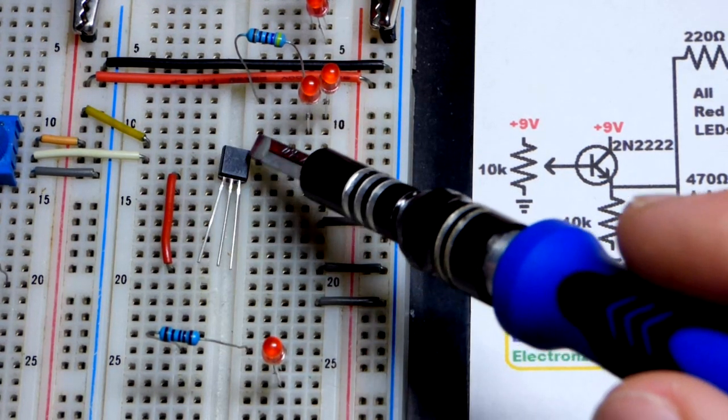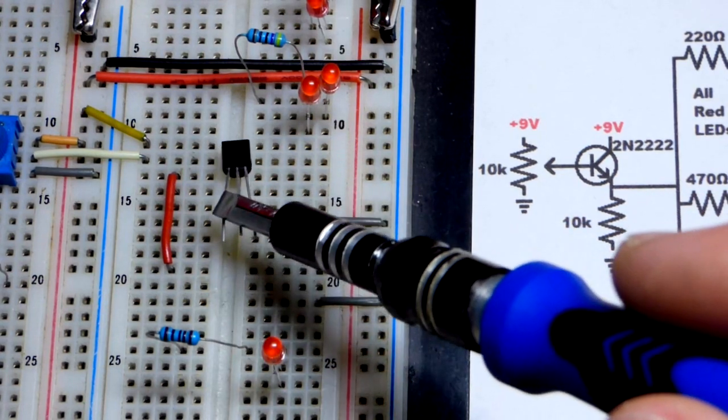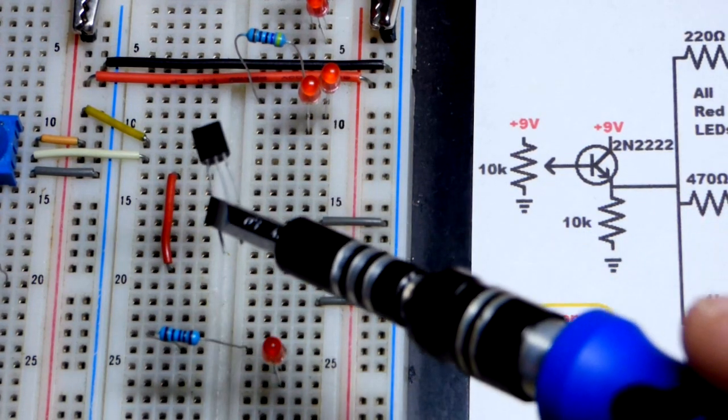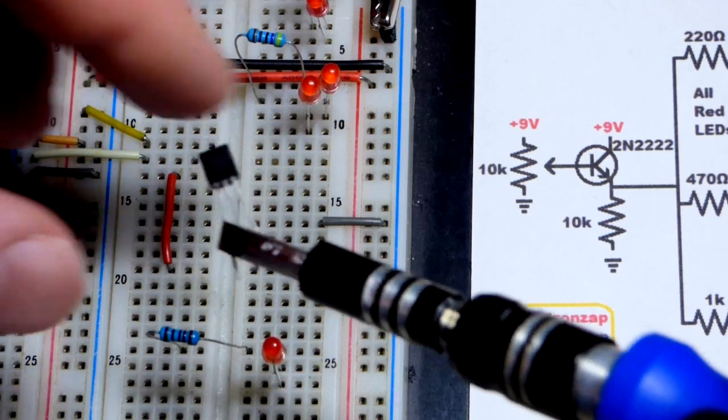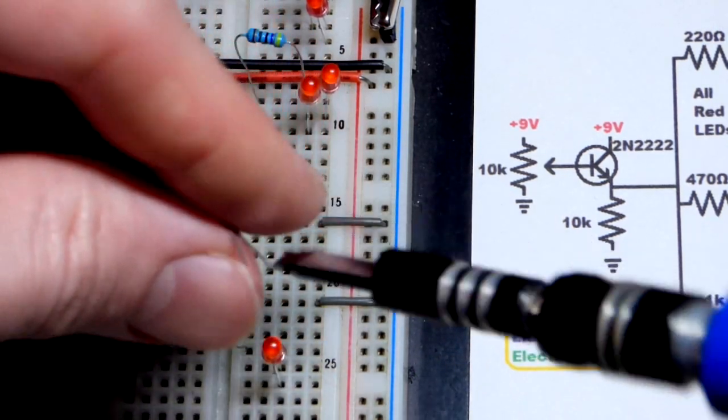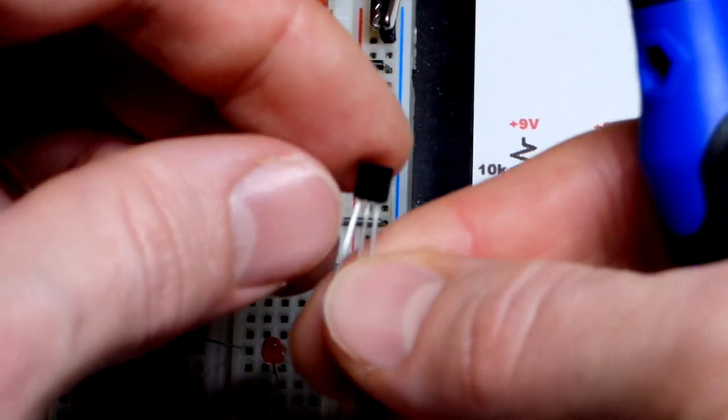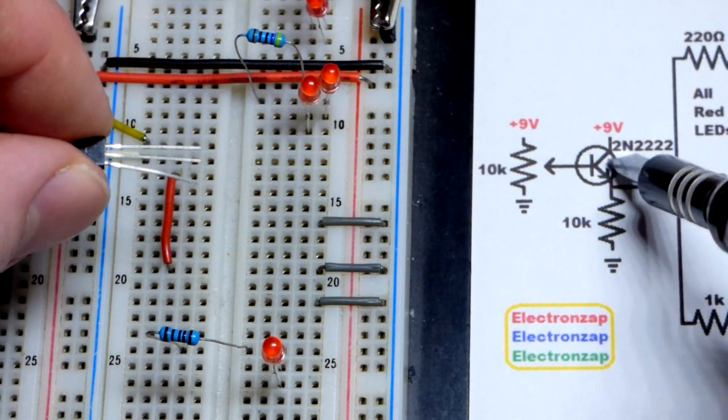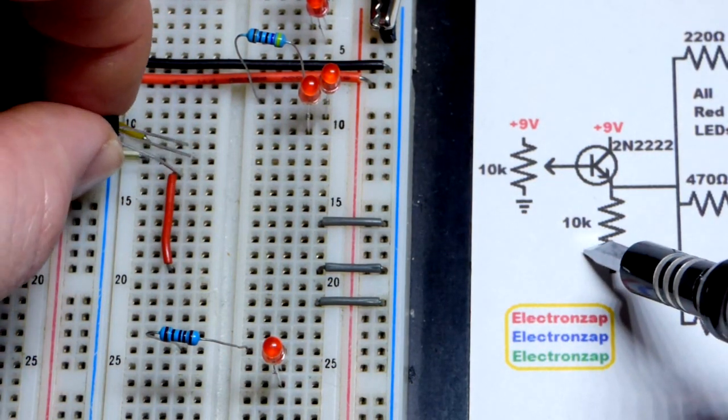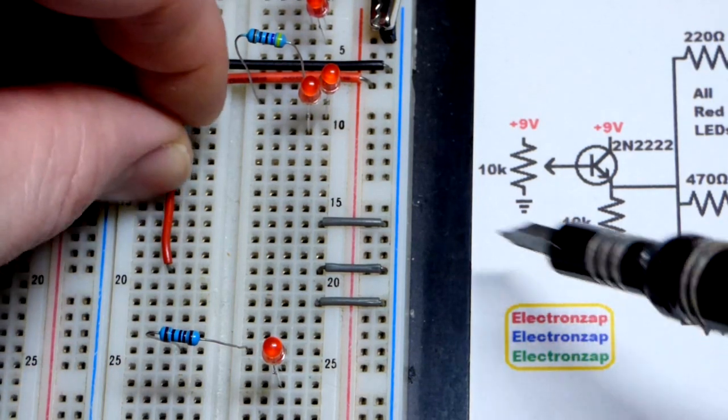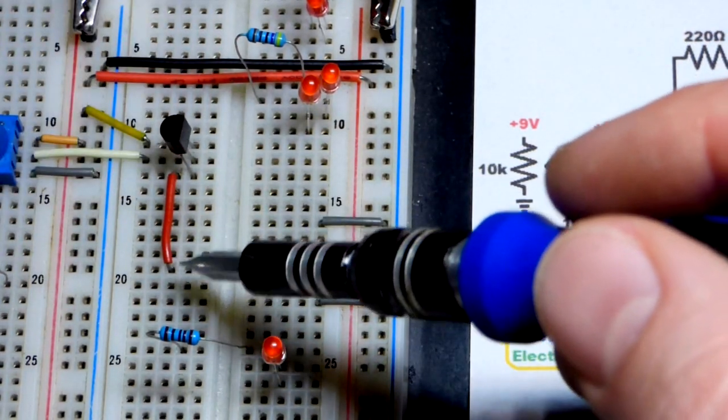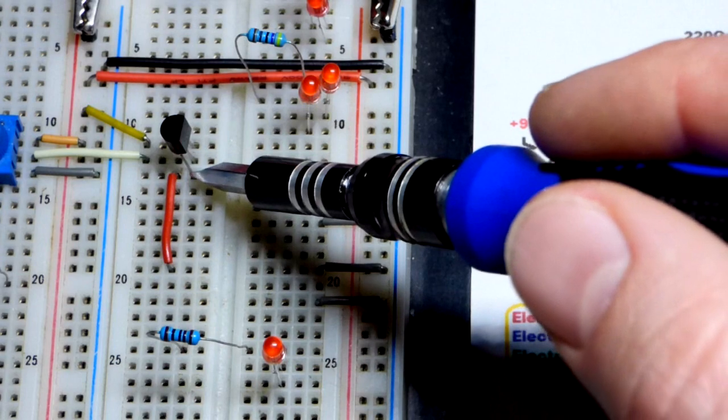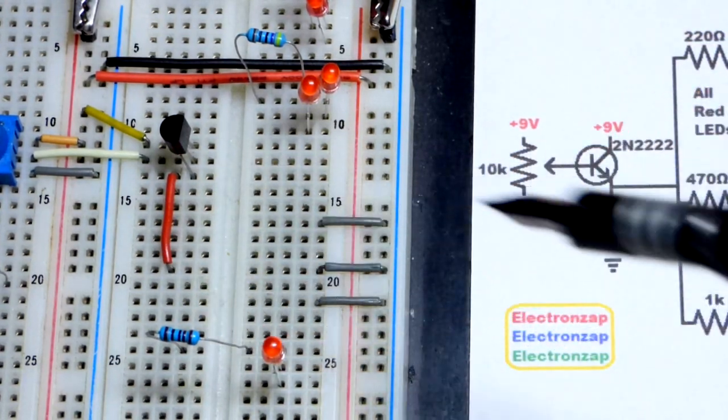So we got the 2N3904 there. The flat side facing up. So left is the emitter. Middle is the base. And the right is the collector. And the screwdriver is magnetized. So it grabbed it. So we are going to swivel it this way. Now the emitter is at the bottom. Emitter is the arrow right there. And we will just stick it right there. And we just got that jumper to make space. We are extending the emitter to that row as well.